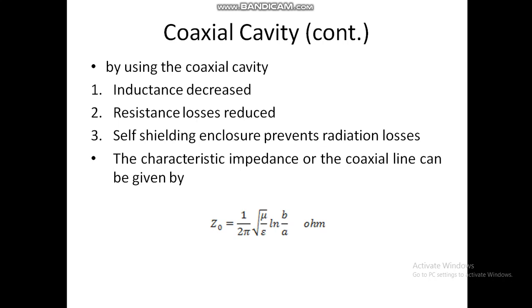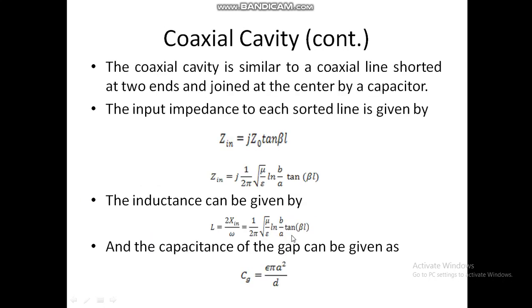Since it is a coaxial cavity, we can calculate the impedance using the method of coaxial line analysis. The characteristic impedance of a coaxial line is: Z₀ = (1 / 2π) × √(μ/ε) × ln(b/a) ohms.